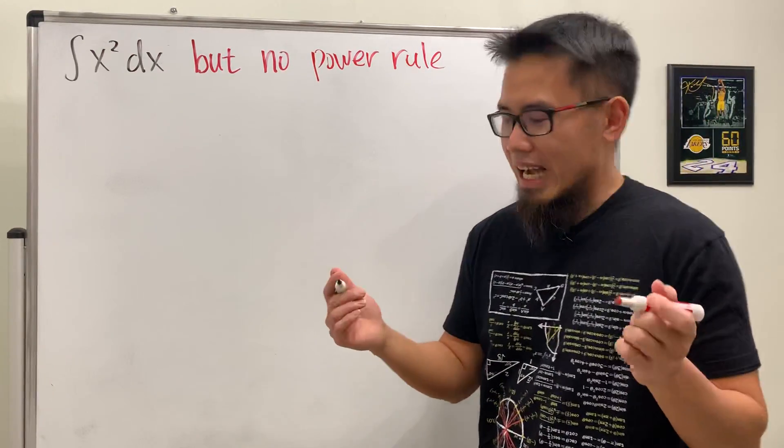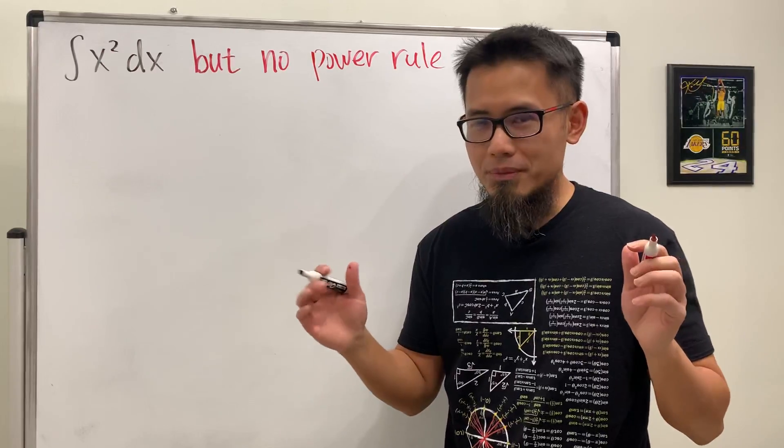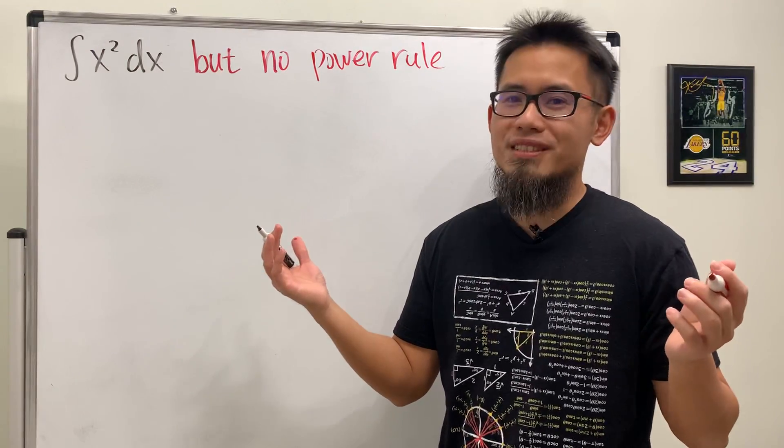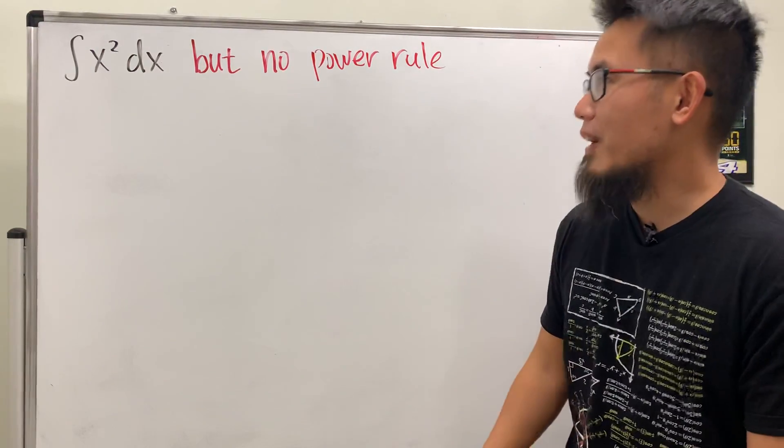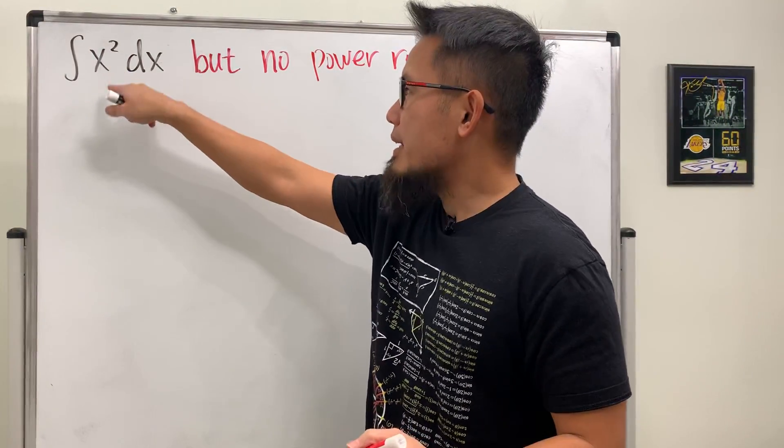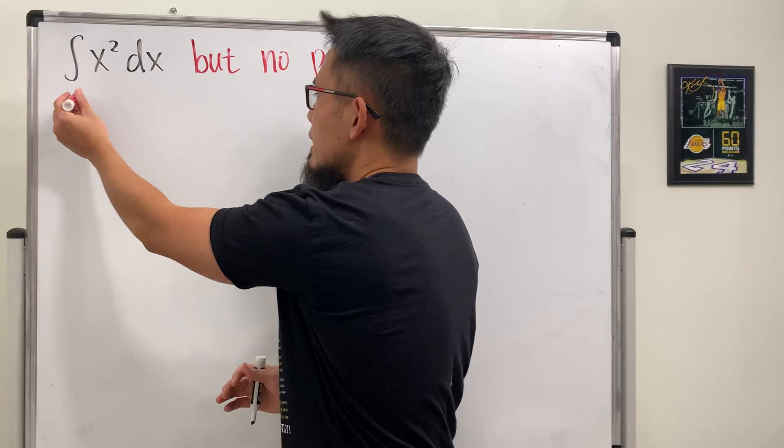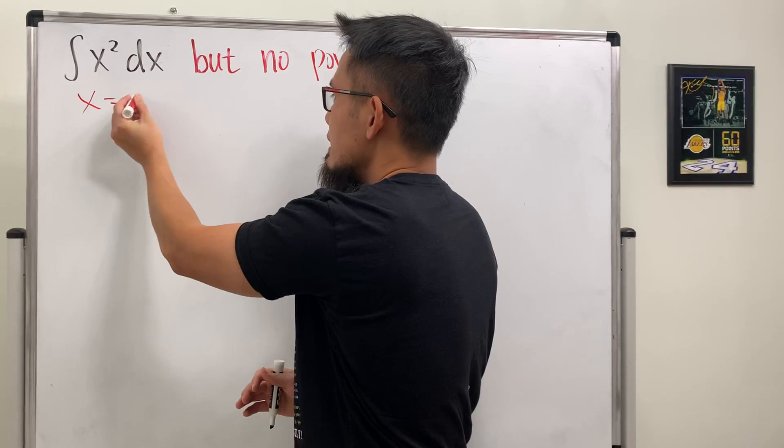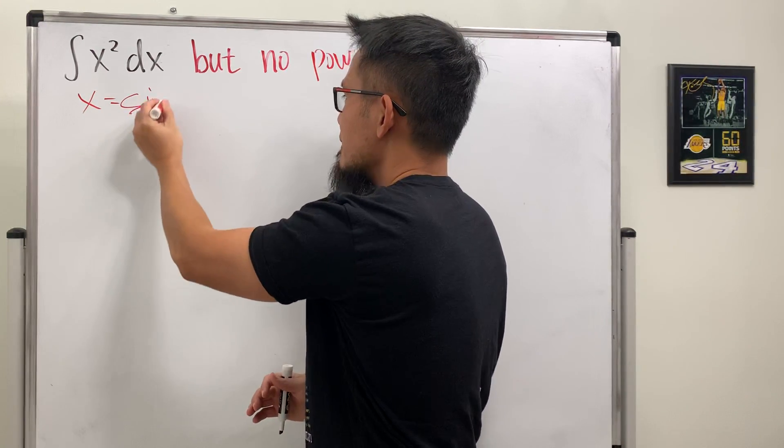So I don't know if I can still do this or not. I haven't practiced this for a while. I will be looking like an octopus. So it will be kind of funny. So here we go. To integrate x squared without the power rule, what we can do is we can let x equal to sine theta.